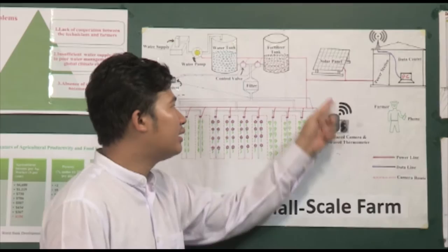This intelligent small-scale farm includes drip irrigation system, image processing system, and solar powering system.